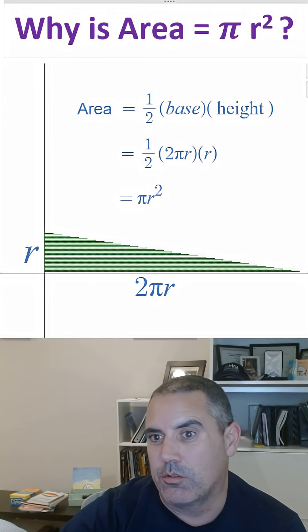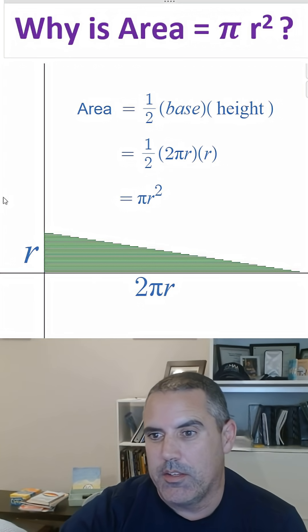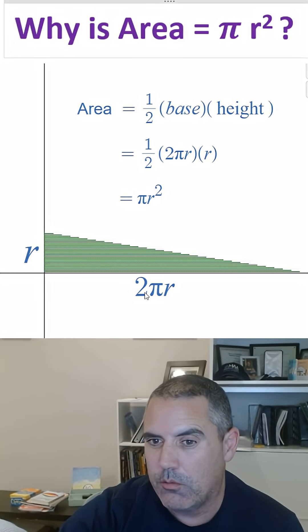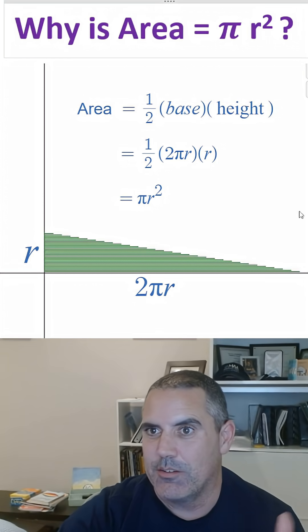That's why the area of a circle is pi r squared. Now the natural question is, why is the circumference 2 pi r? But that's actually the definition of pi. But that's another video.